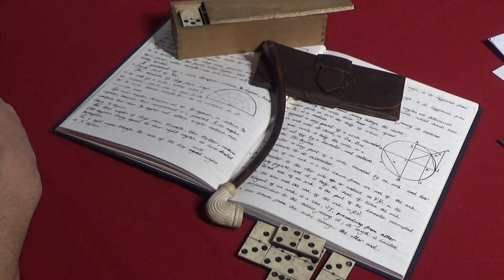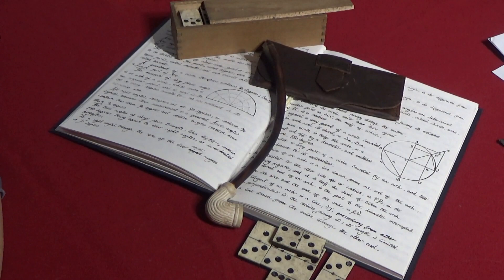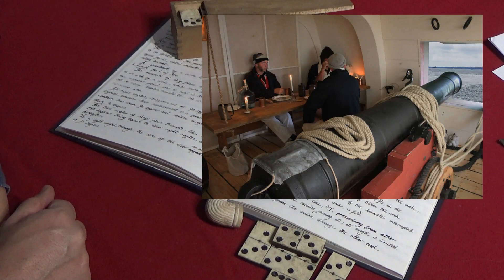We reenact medieval camp life around 1360 and 1805 life aboard a ship of the line, in particular the HMS Temeraire around the time of the Battle of Trafalgar. The Temeraire's story was too good an opportunity to be missed and needed to be told, so we built a gun deck.